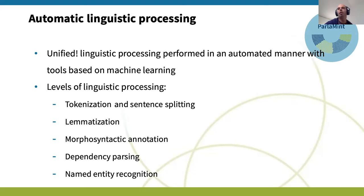We also use named entity recognition categories. I'll start by noting that the automatic processing of linguistic content is done by machine learning, which will be important later on when we look at some limitations of this processing.